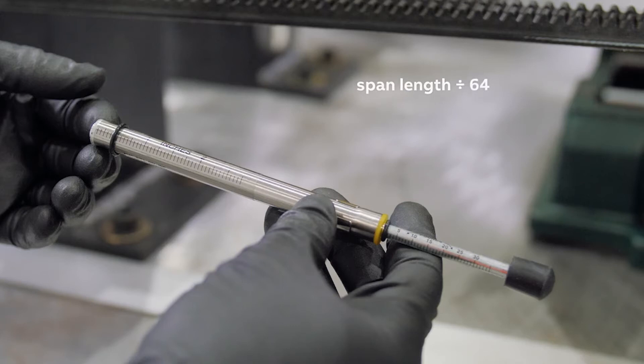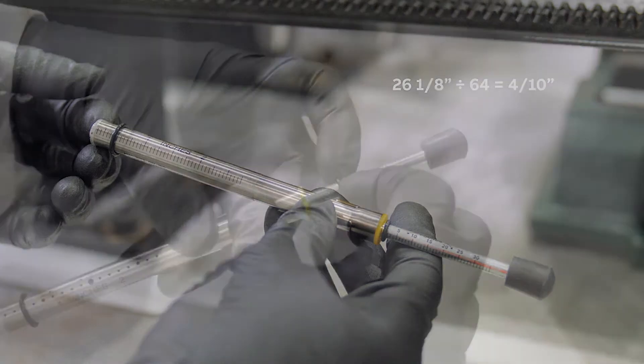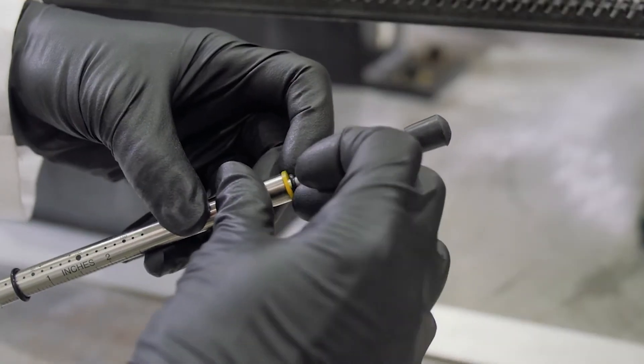In this example, the span length is 26 and 1 eighth of an inch. Dividing by 64 results in large O-ring placement of approximately 4 tenths of an inch. Set the small O-ring to zero.